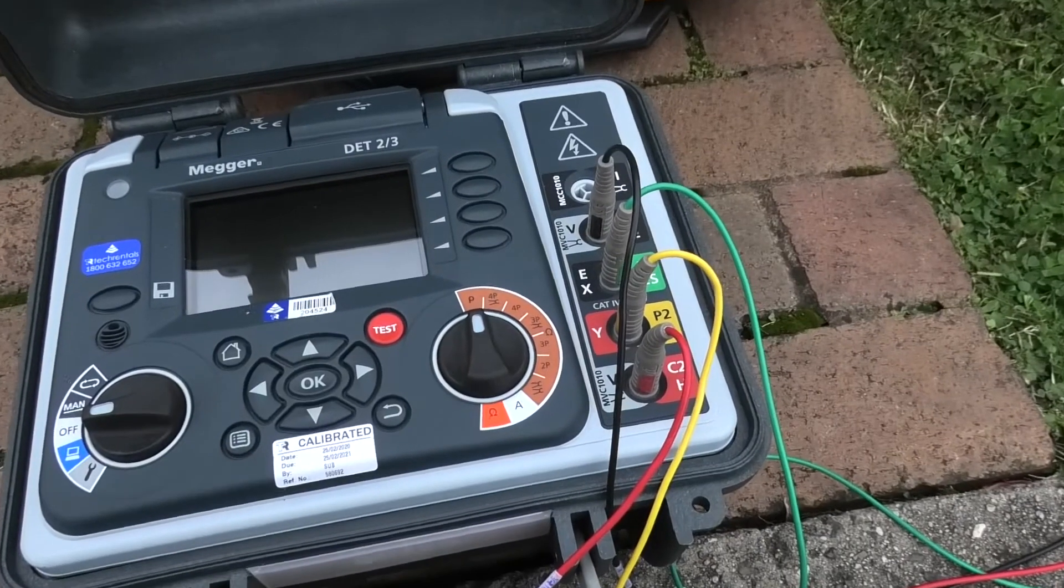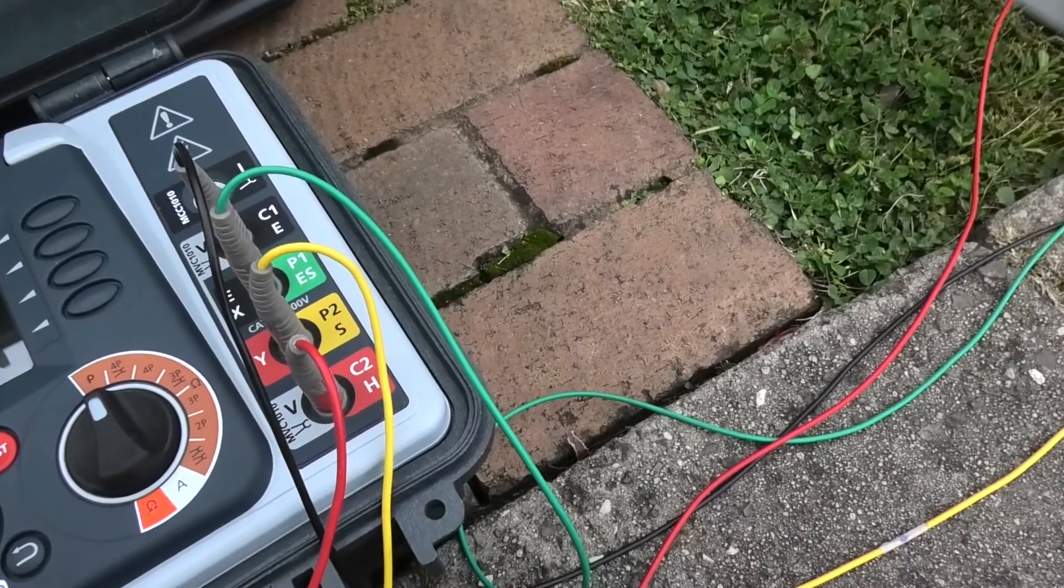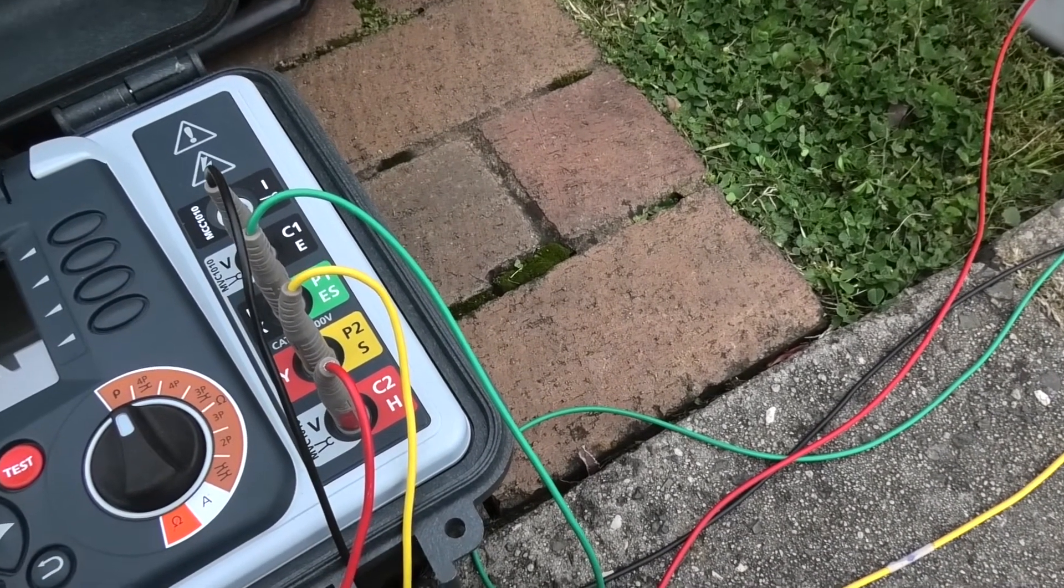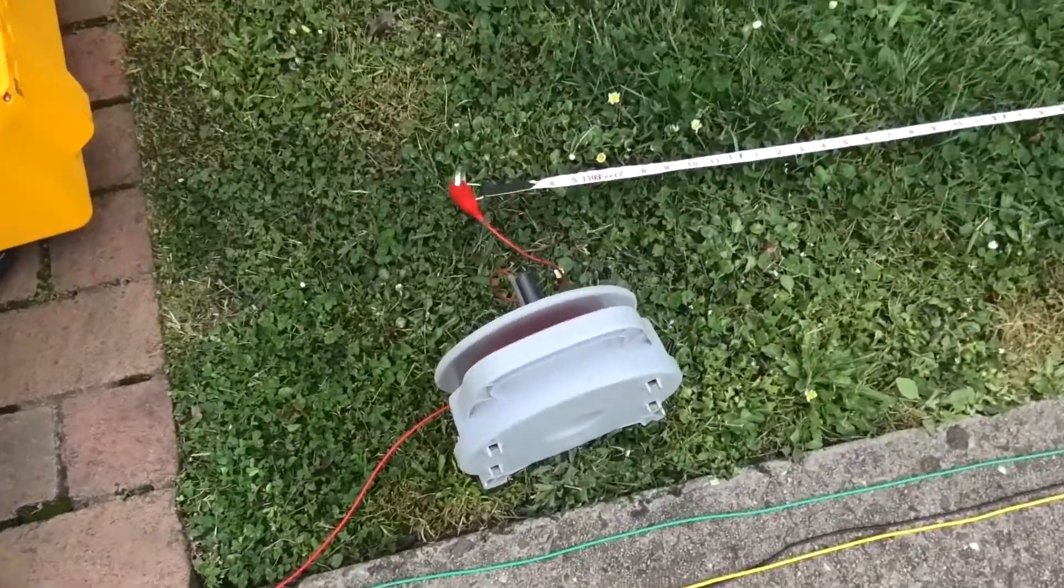I've now wired the instrument up. Now you can see we've got the appropriate wires, we've got the two outer current and the two inner potential wires, and we have to run the reels out.